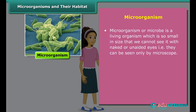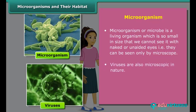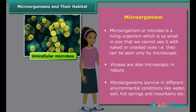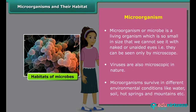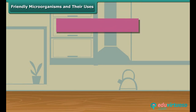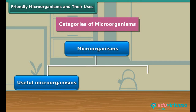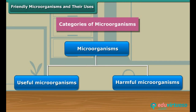A microorganism or microbe is so small in size that we cannot see it with naked or unaided eyes. They are broadly classified into four major groups: bacteria, fungi, protozoa, and algae. Viruses are also microscopic. Microorganisms can survive in different environmental conditions. These microorganisms are broadly categorized into useful microorganisms and harmful microorganisms.